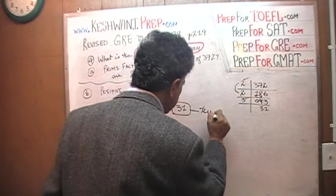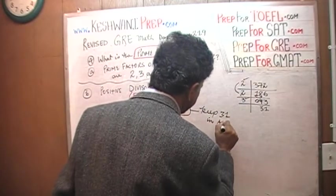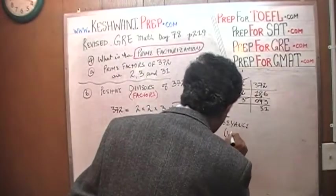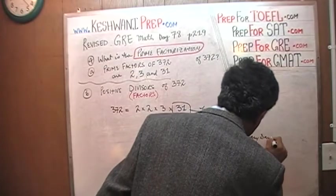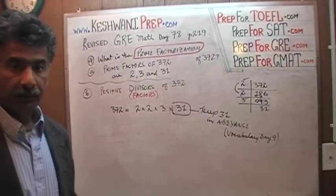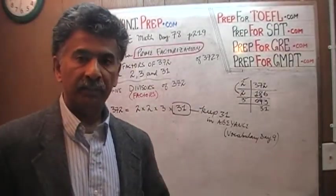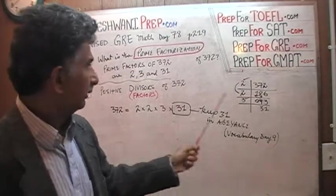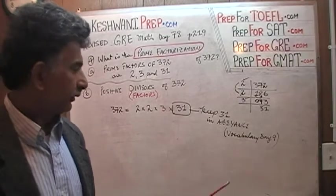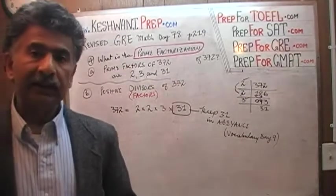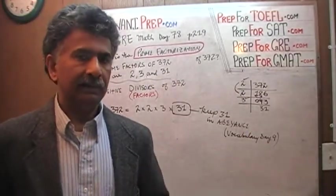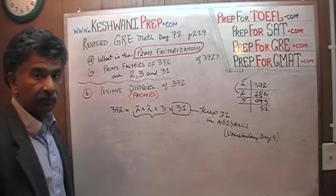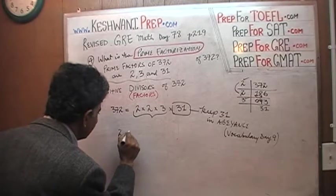For the time being, to keep our life simple, we are not going to worry about 31. We are going to keep 31 in abeyance. If you do not know what it means to keep something in abeyance, and if you are interested in improving your vocabulary, and I see no reason why you wouldn't be, because not only do you want a decent score in math but also in the English part of the GRE, just type in my name Keshwani and then vocabulary day 9. Learn about abeyance. To keep something in abeyance means to keep it aside, we will deal with it later. Right now, we are going to deal with these three guys.